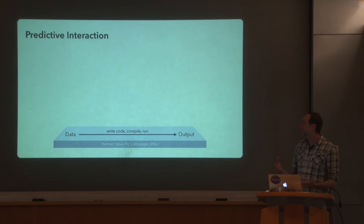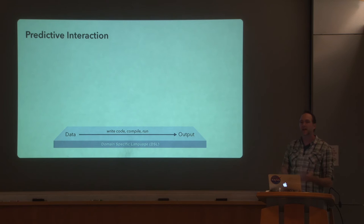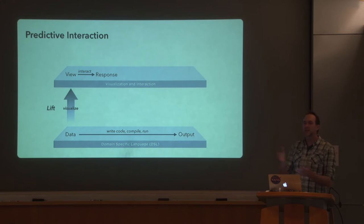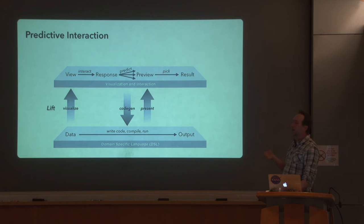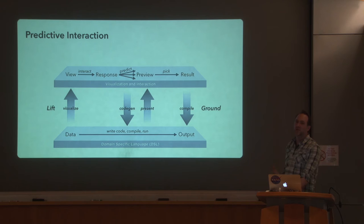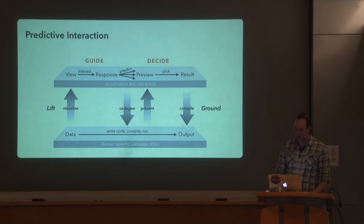With predictive interactions — similar to before — we start with a domain-specific language hopefully well-designed for the task it supports. We do a lifting into a visual representation, which might be these different content representations. You can interact with them and should obviously get immediate responses. But then those interactions serve as input for searching over a space of possible transformations. What we do is search in the space of the language itself — searching over these formal objects — then bring it back to populate a space of previews. You can see those previews, select one, or do revision. And at the very end, we have a program that we can run. So again, we're doing this guide-decide loop: our input is guiding the possible predictions we're getting, and we can decide. If we don't like what's previewed, we might take action ourselves or provide different input.